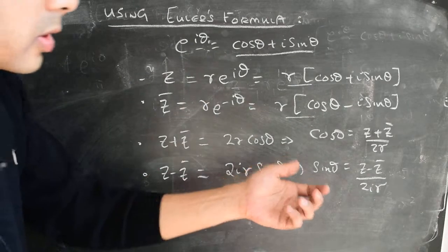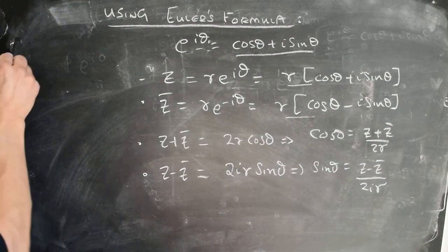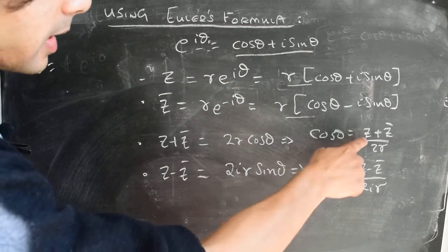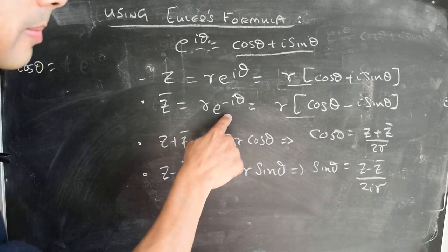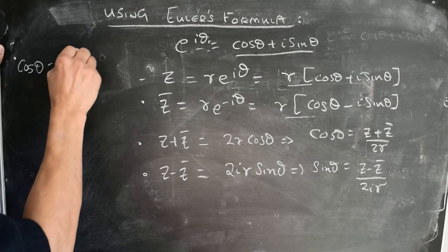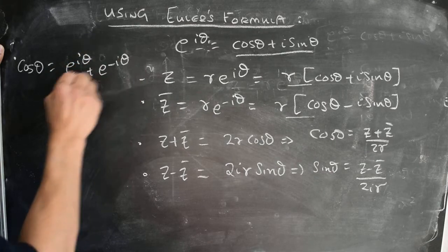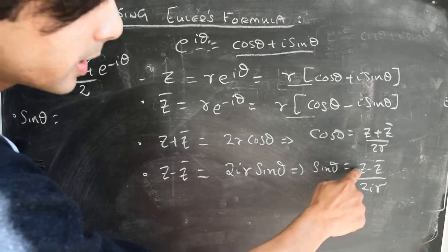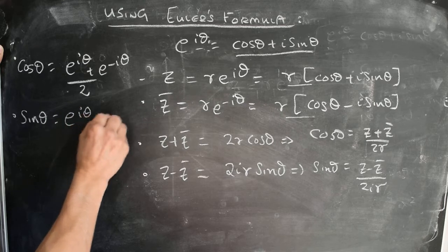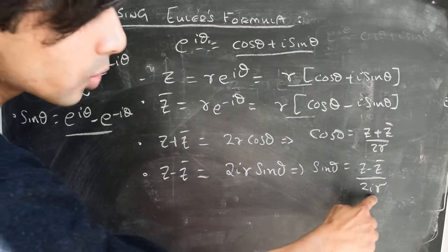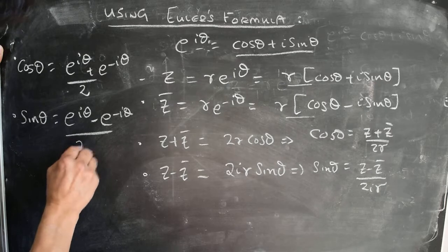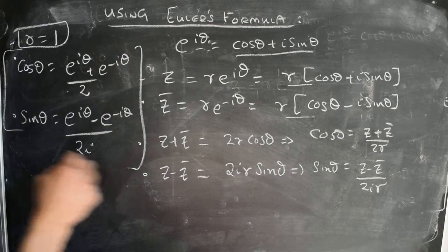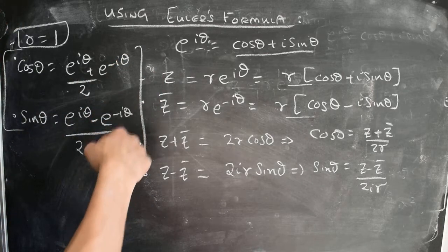Now focusing on the special case when r equals 1: z is simply e to the power i·theta and z-bar is e to the power minus i·theta. So cosine theta can be written as (e^(i·theta) + e^(−i·theta)) / 2, and sine theta equals (e^(i·theta) − e^(−i·theta)) / 2i. These are very useful relations to remember for cosine and sine in terms of the complex exponential.